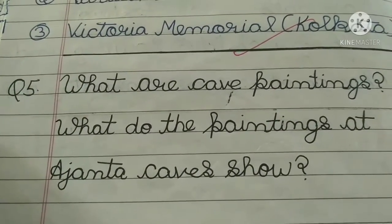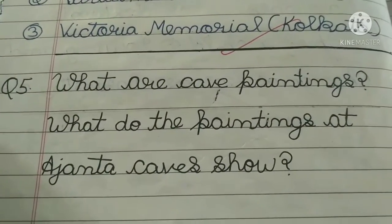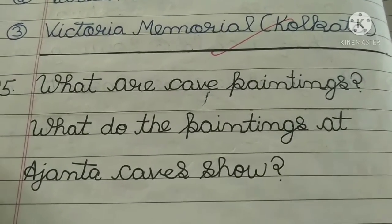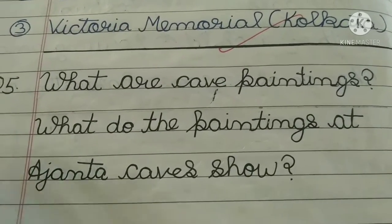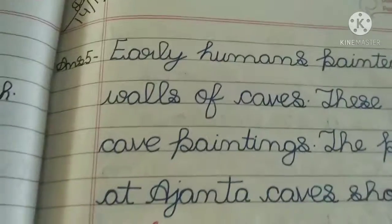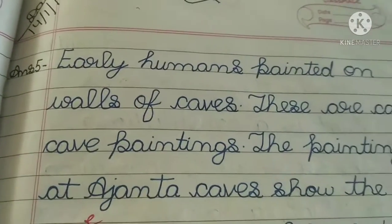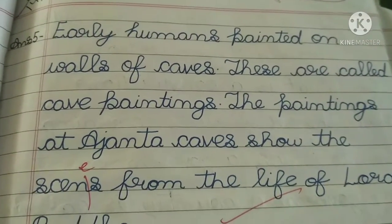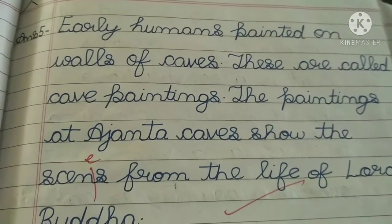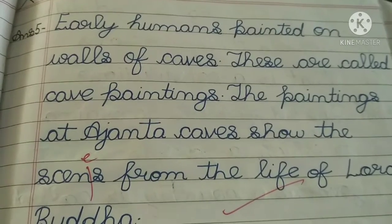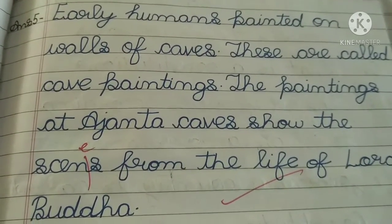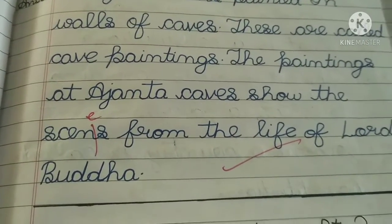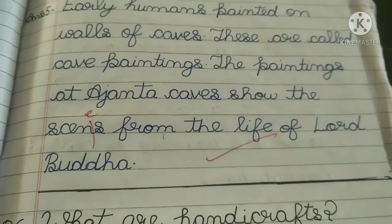Question number 5, what are cave paintings? What do the paintings at Ajanta Caves show? Answer is, early humans painted on walls of caves. These are called cave paintings. The paintings at Ajanta Caves show the scenes from the life of Lord Buddha.